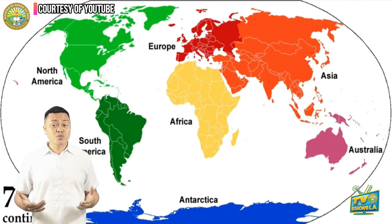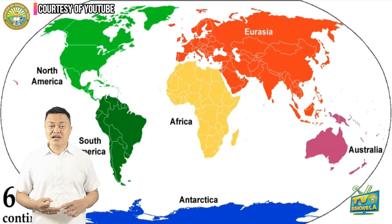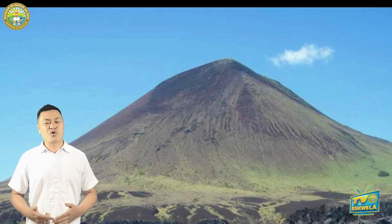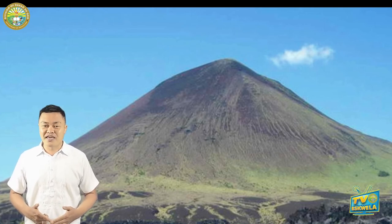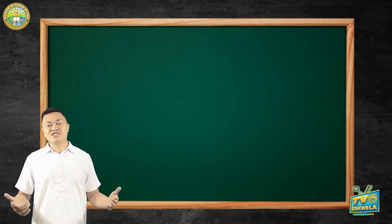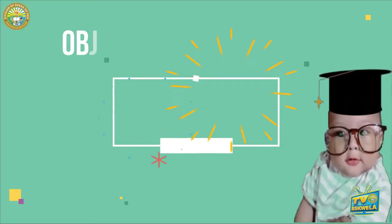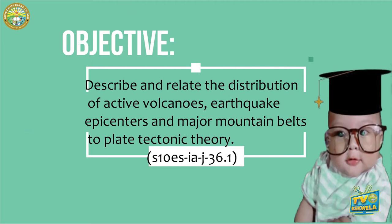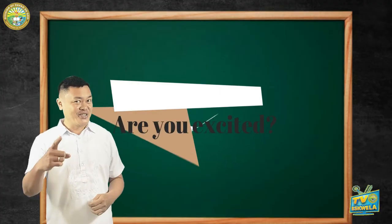Have you ever wondered how the land masses, volcanoes and mountains, the islands and the continents were formed? We have Asia, Africa, North America, South America, Europe, Australia and Antarctica. Do they just exist the way they are now, or are they just the results of a very long process and sequential events? In this lesson, after watching the video, the learners are expected to describe and relate the distribution of active volcanoes, earthquake epicenters and major mountain belts to plate tectonic theory.